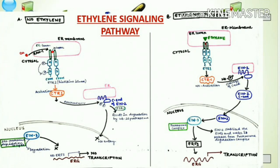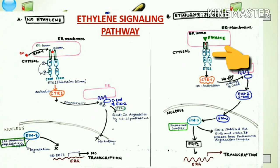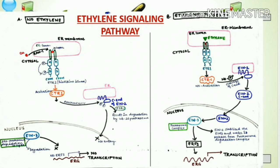In the presence of ethylene, the ethylene binds to the ETR1 receptor, which switches off the overall activity of this receptor — this is called negative regulation — because in normal cases binding of a ligand activates the receptor, but here binding of ethylene leads to inactivation of ETR1. Because of receptor inactivation, there is no autophosphorylation in the histidine kinase domain and therefore no phosphorylation of CTR1 protein.